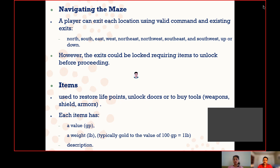However, there might be some exits which are locked. If the exits are locked, then you will require an item to unlock the door before proceeding. Items can be used to restore life, unlock doors, or to buy weapons, seals, and armors. Each item will have its own value, weight — typically 100 GP equal to 1 EB — and its own description.